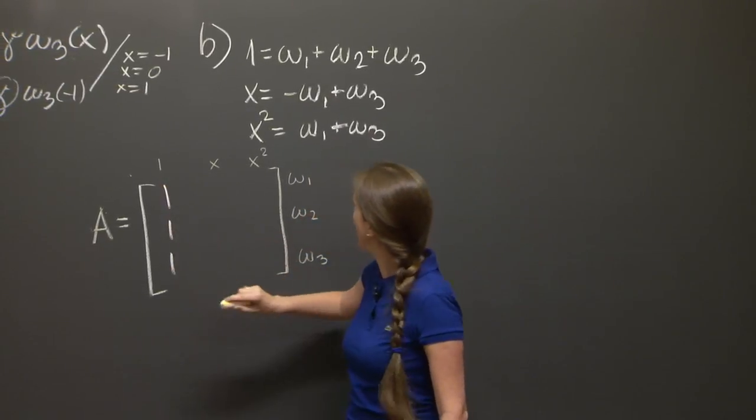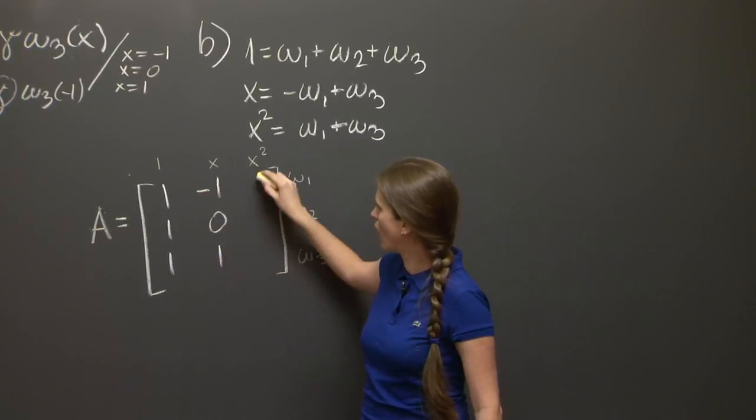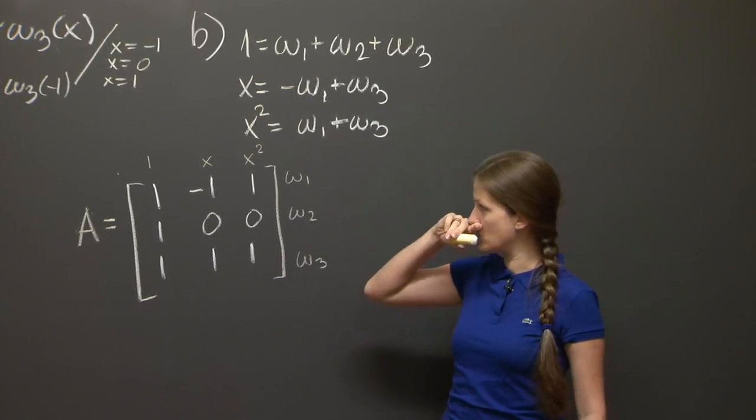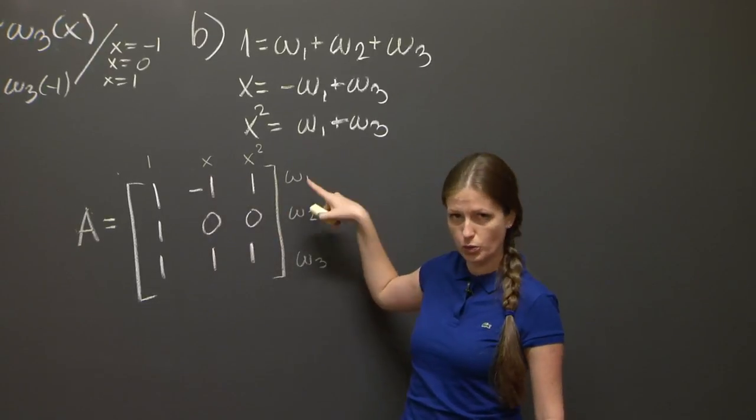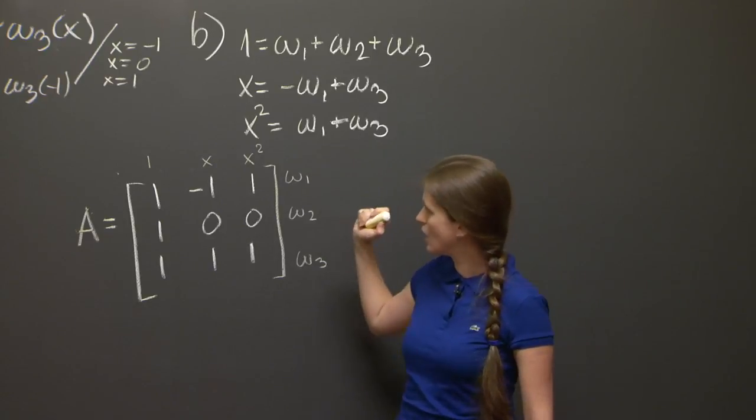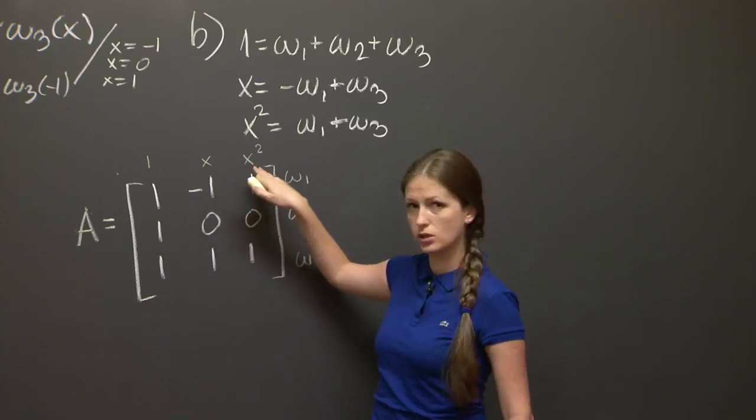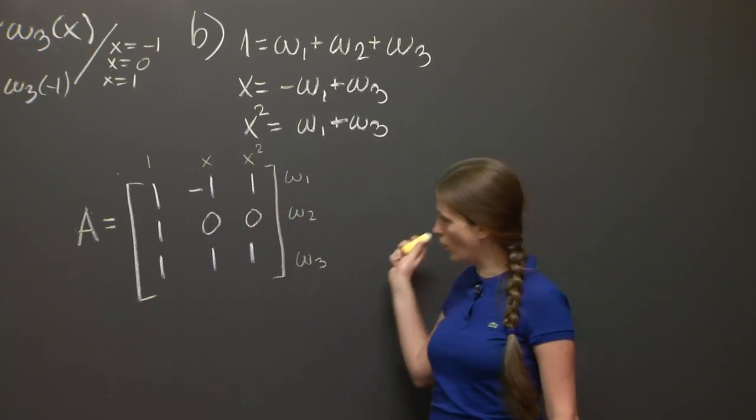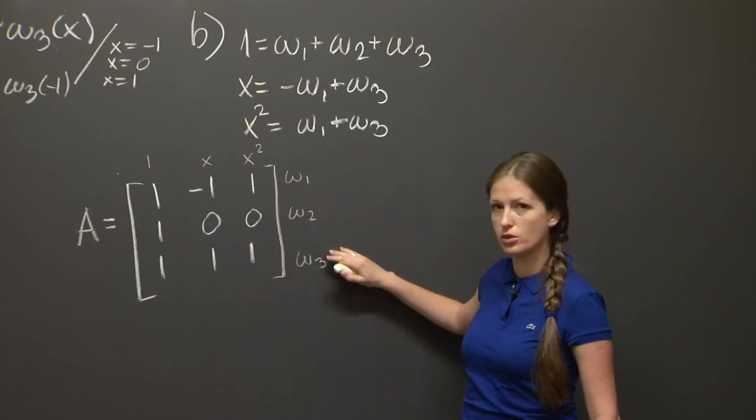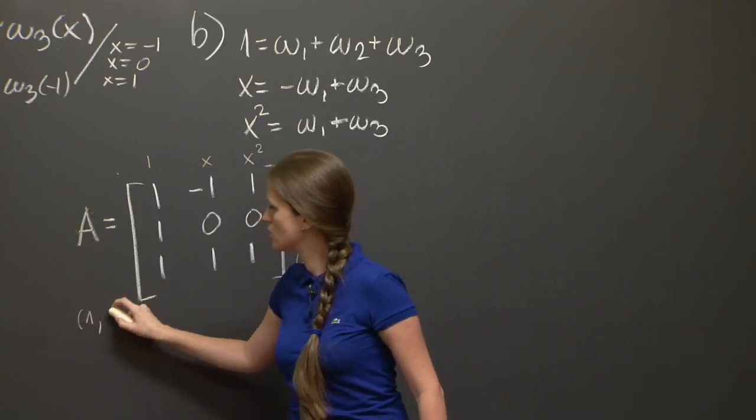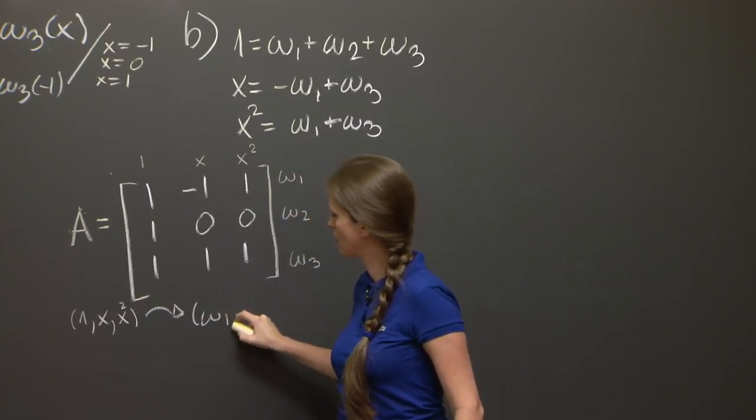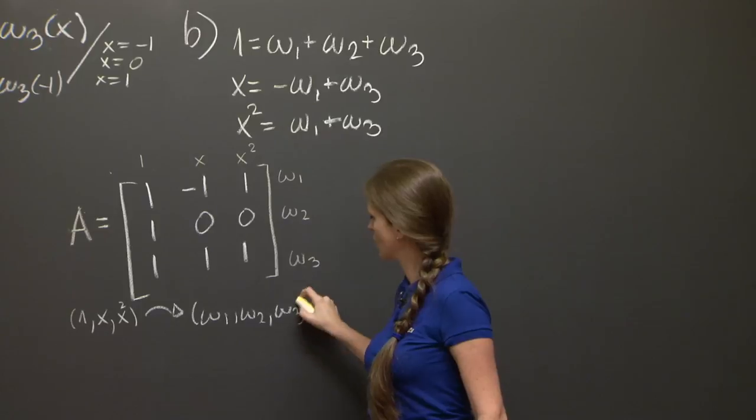Namely, since we know how to express 1, x, and x squared in terms of w1, w2, and w3, we can just copy this information over to this matrix, getting 1, 1, 1, -1, 0, 1, 1, 0, 1. This is a matrix that takes something in the basis 1, x, x squared and expresses it in w1, w2, w3.